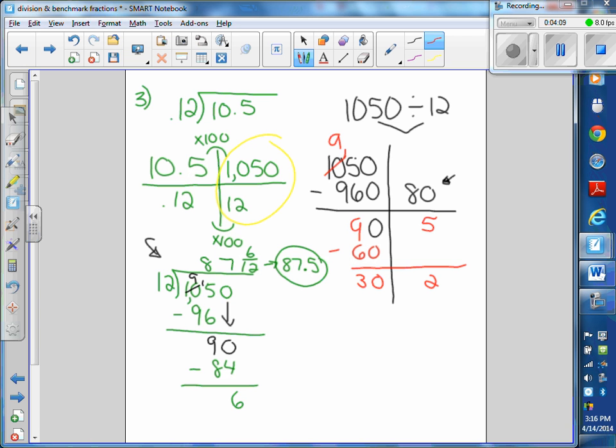So I add this up and I get 87, and my remainder is 6. So I say it's 87 and 6/12, which is 1/2, which is 0.5. 87 and a half or 87.5.